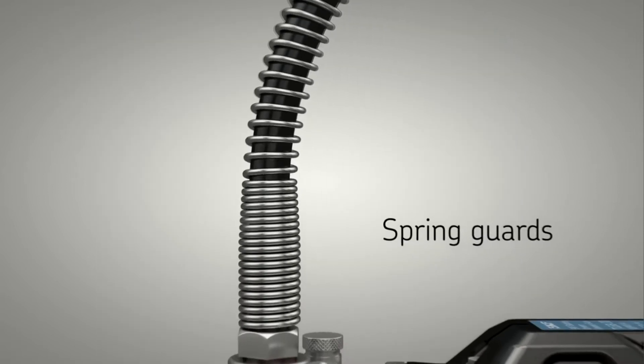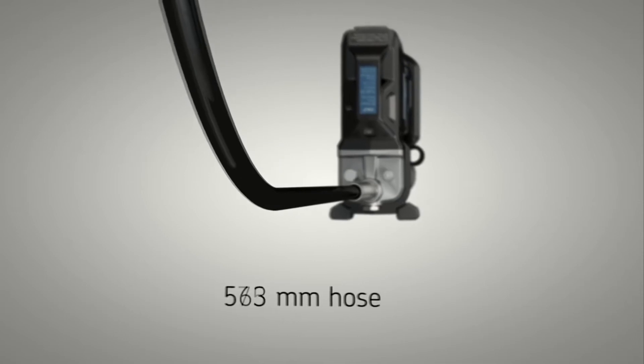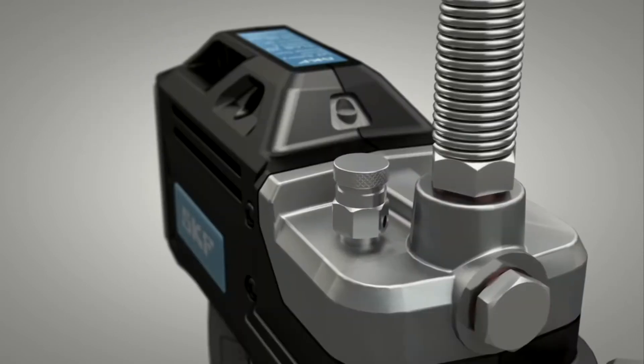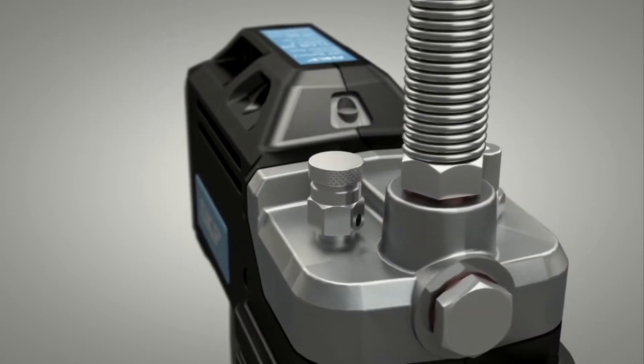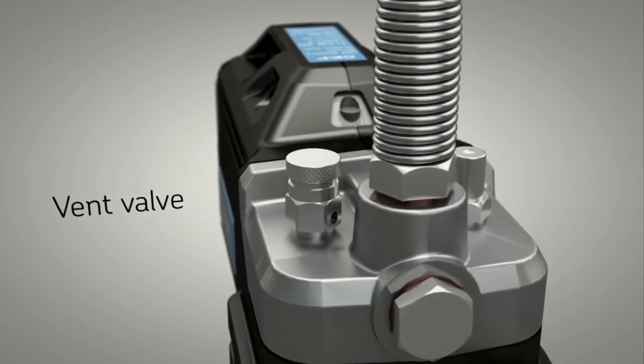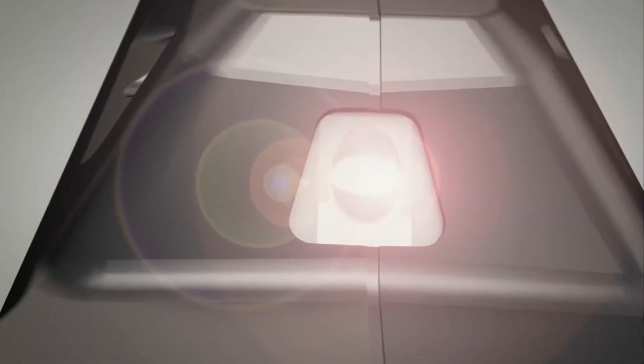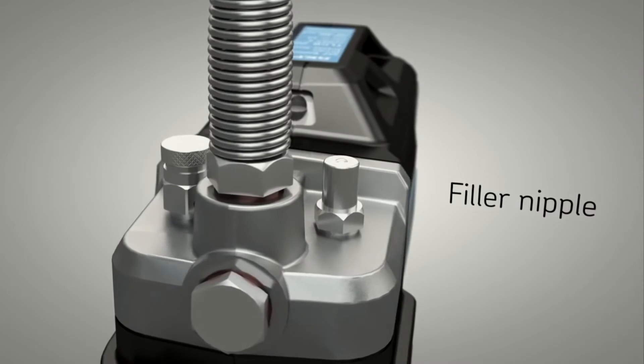Spring guards preserve the flex hose life by preventing the hose from kinking. The gun is equipped with a vent valve for trouble-free priming, a bright LED light and a filler nipple.